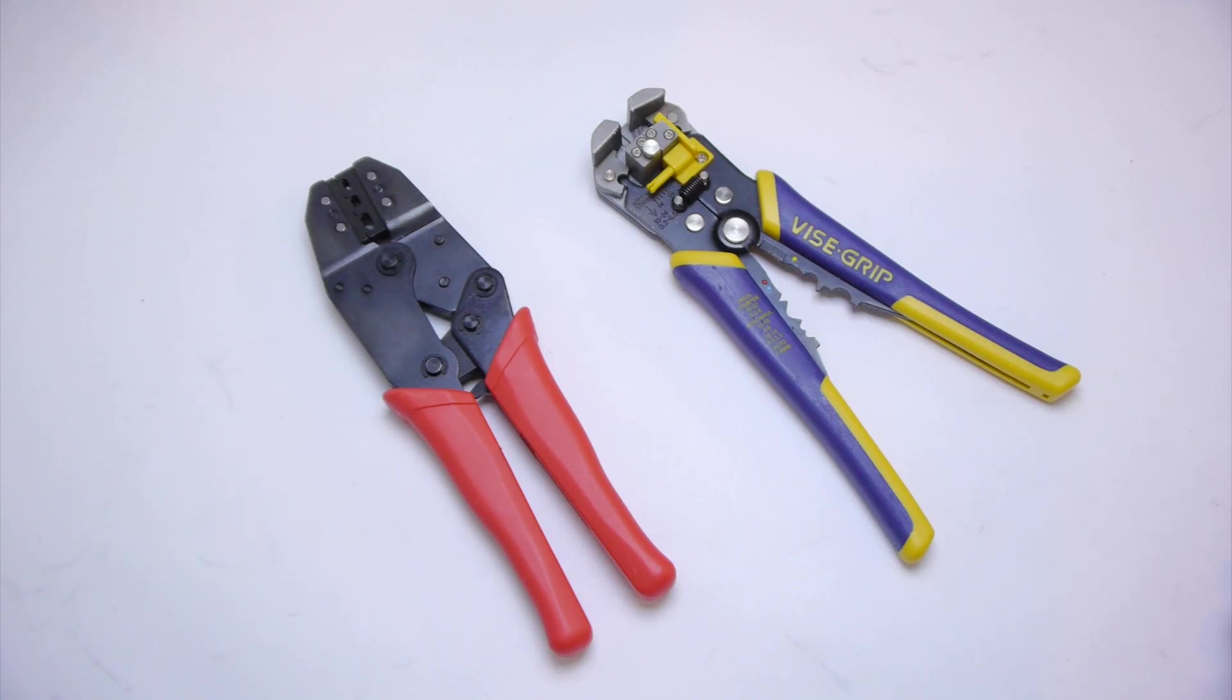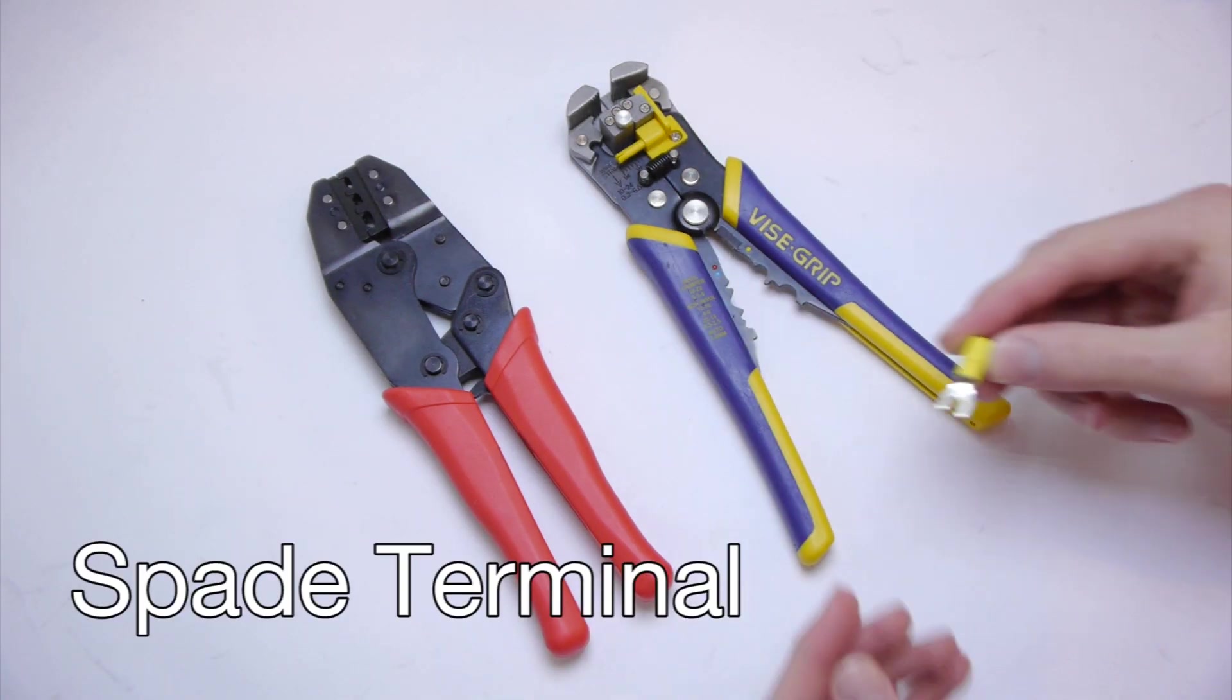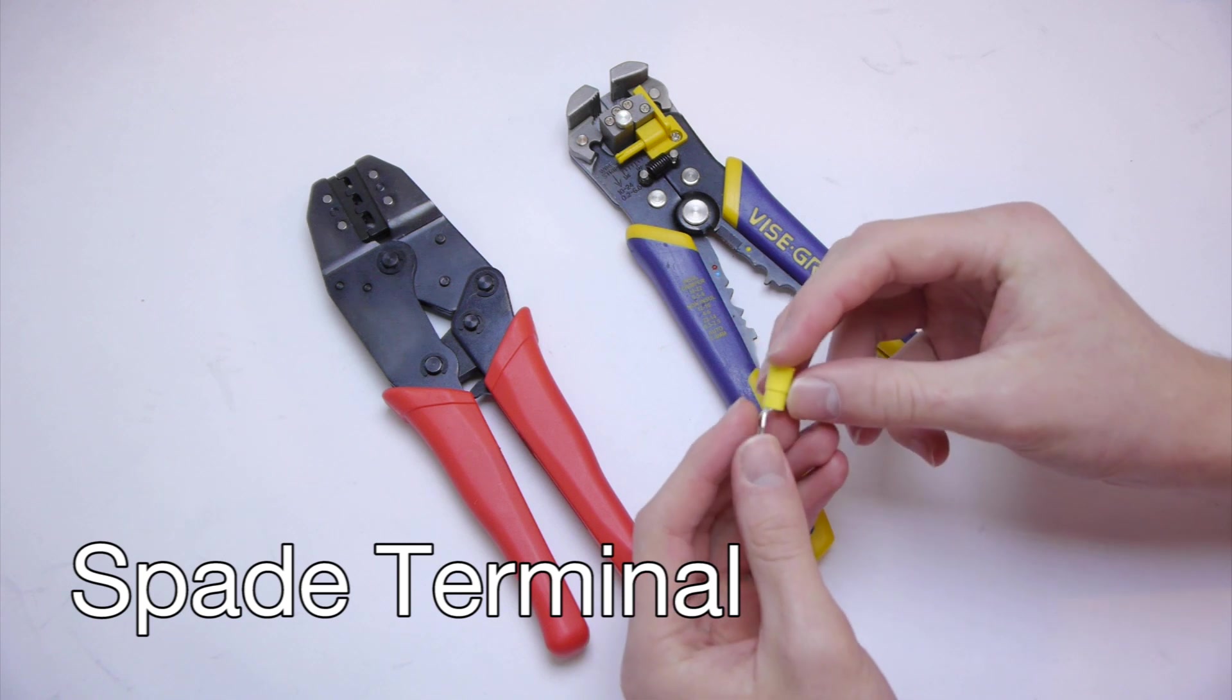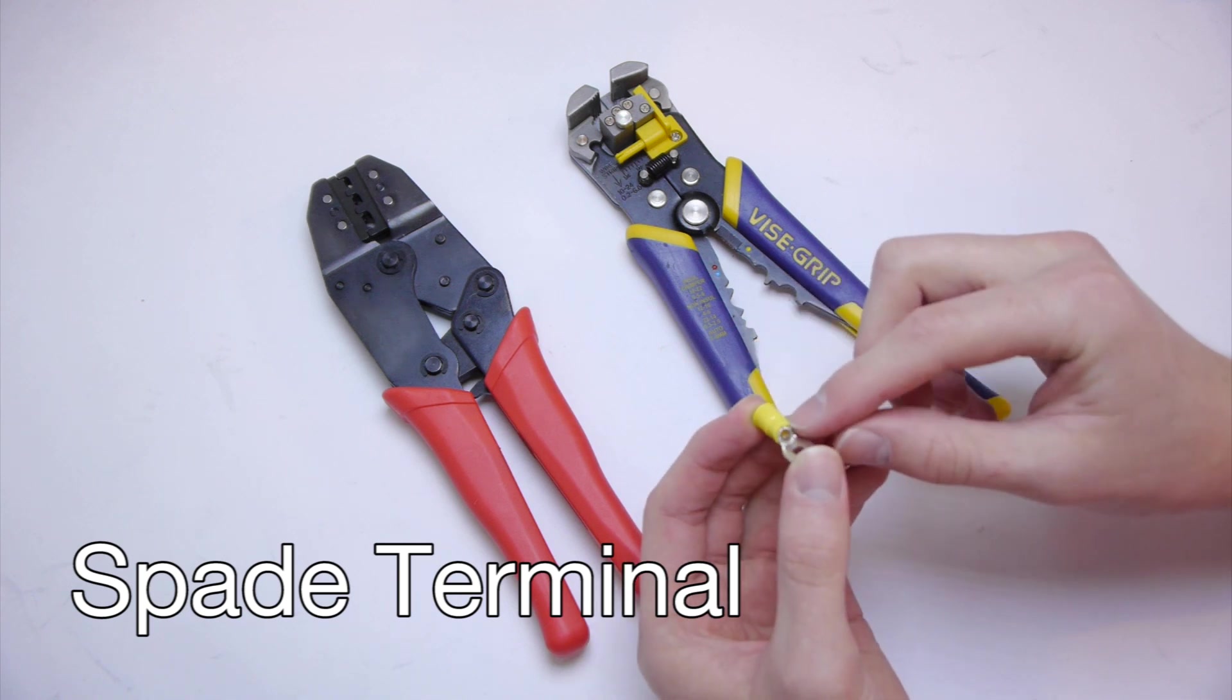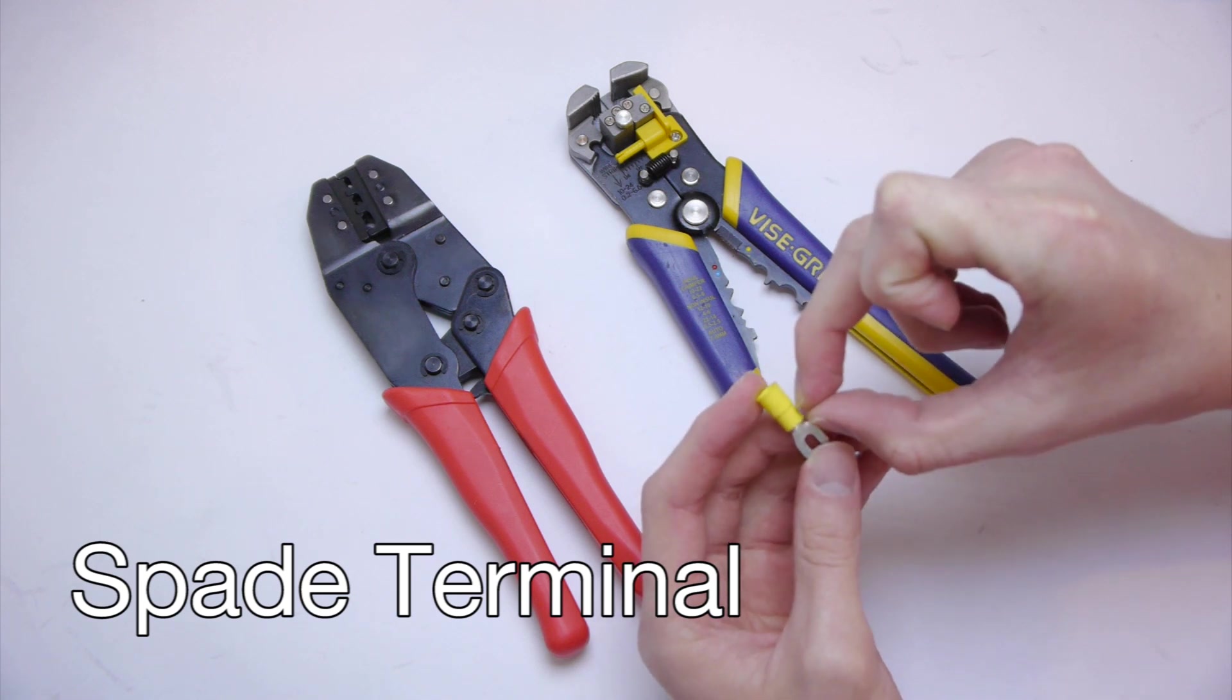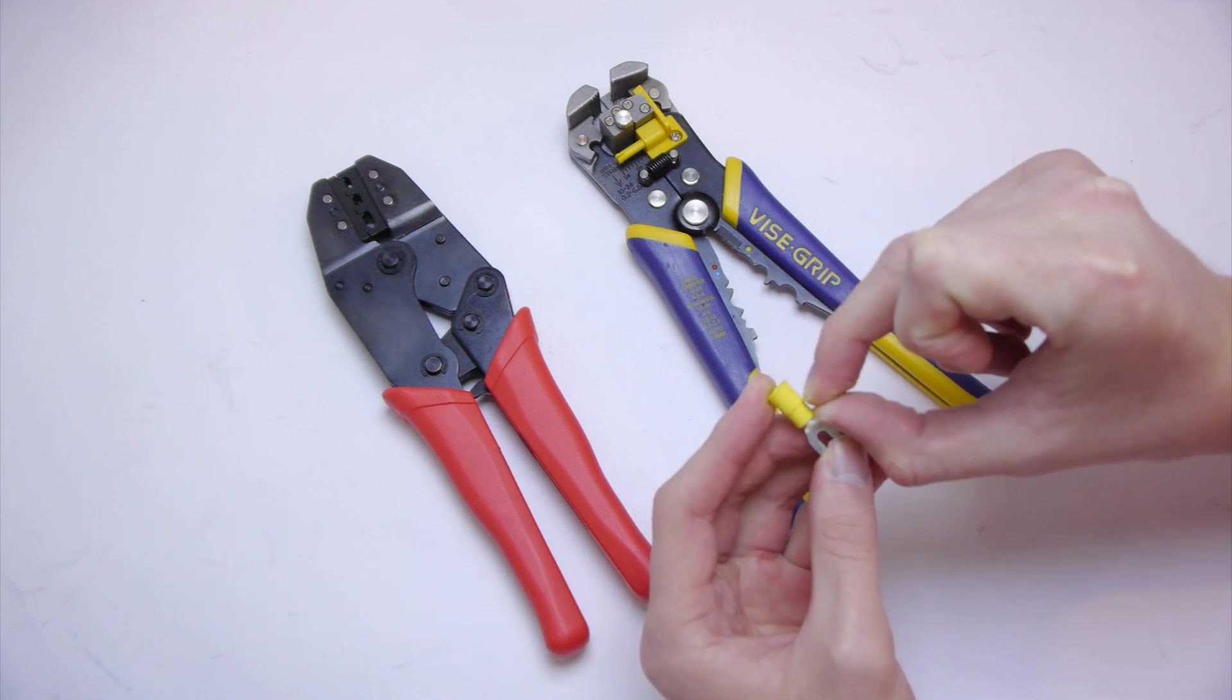Now I'm going to show you how to strip and crimp a wire. First thing you need to do is to look at the connector and see how much metal you're actually going to be crimping. You can look inside to see, on this particular one, it's this length right here, so that's how much you want to strip off.